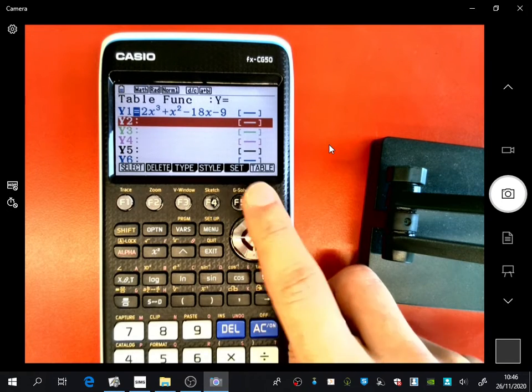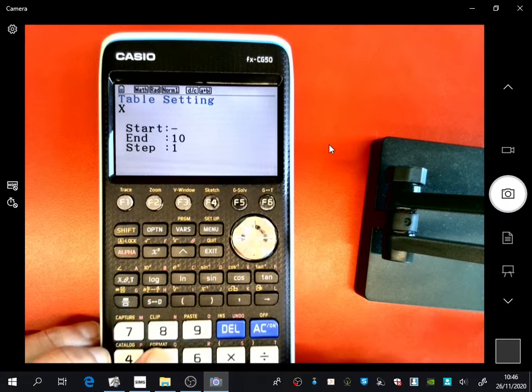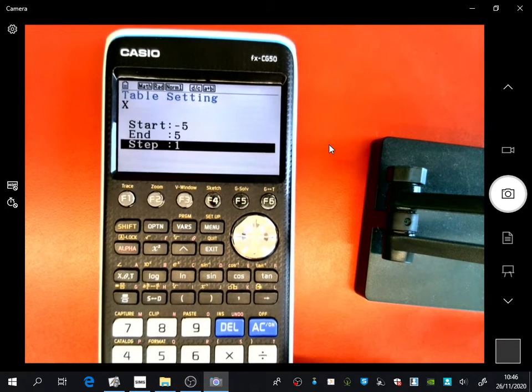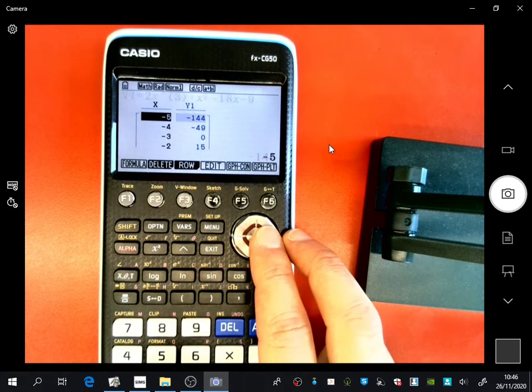And then all you need to do is you can set what values I want to put in. So I could put in values between maybe minus 5 and 5. And it will go up in ones.